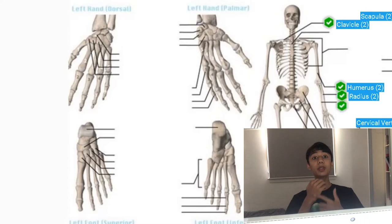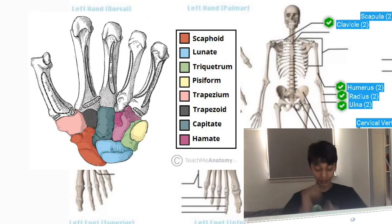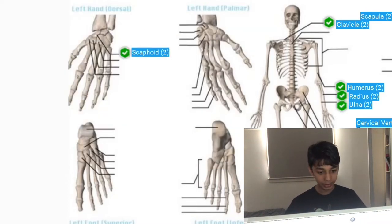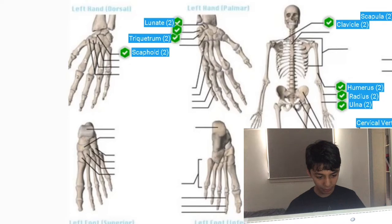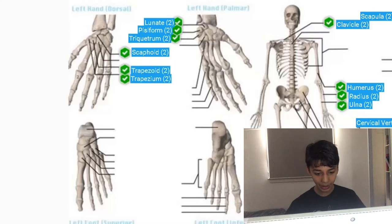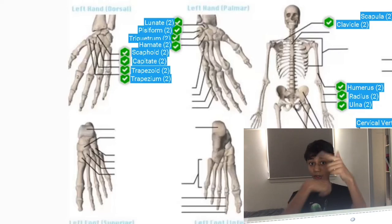And now we are going to name all these eight carpals. Scaphoid, lunate, triquetrum, pisiform, trapezium, trapezoid, capitate and hamate. The carpals basically allow for vertical movement of your wrist.